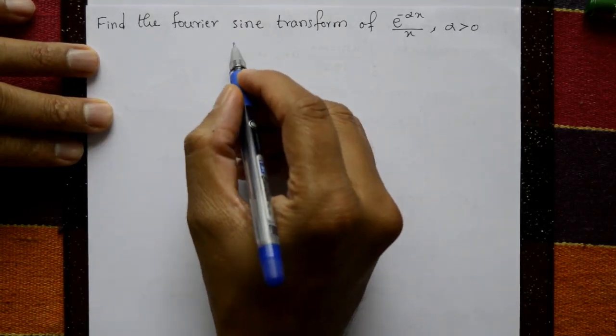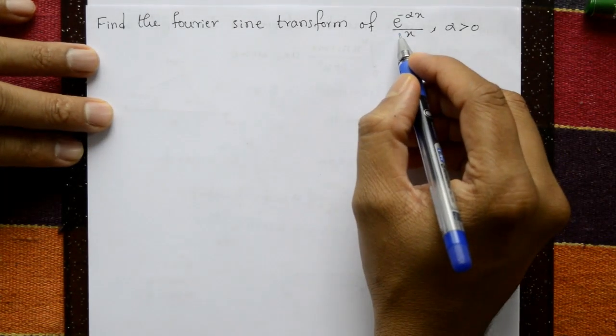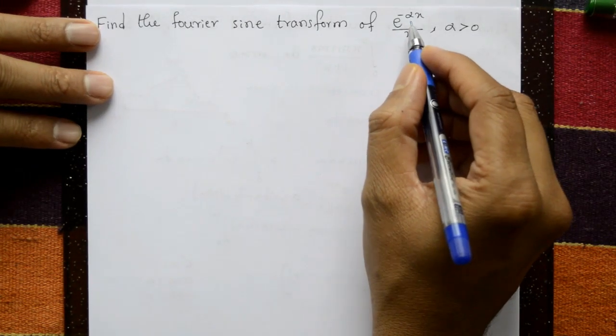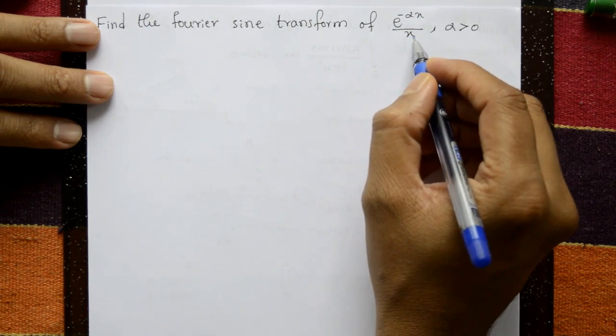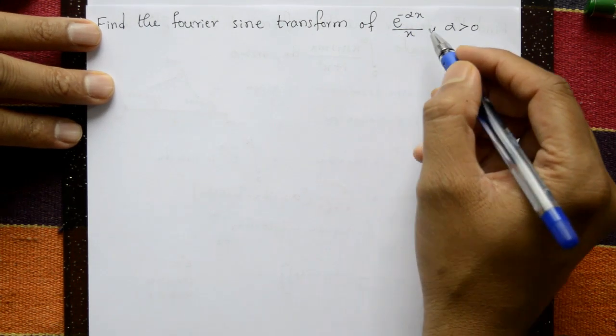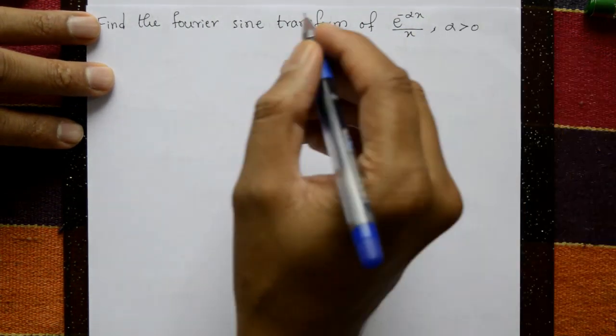Find the Fourier sine transform of e raised to minus alpha x divided by x, where alpha is positive, greater than 0.